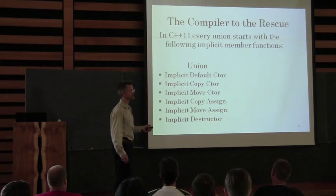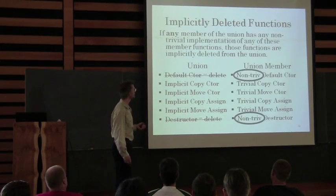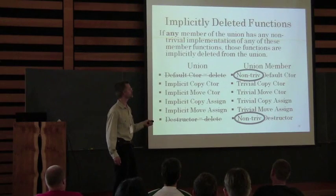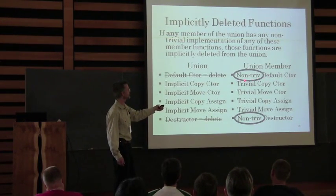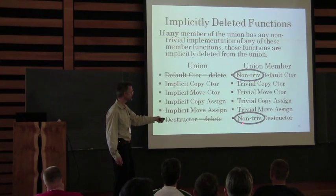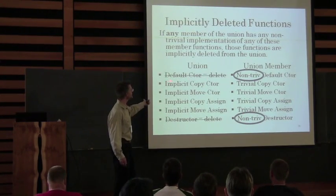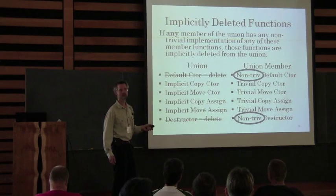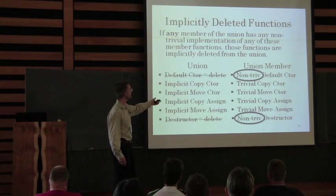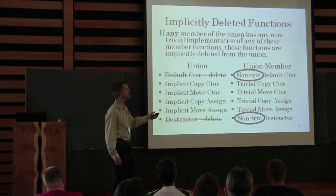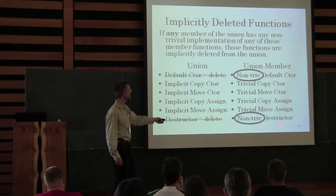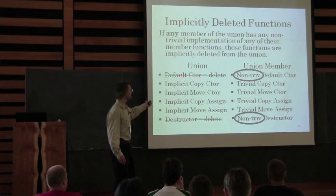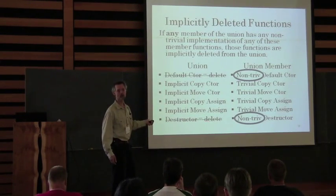Every union starts with the following implicit member functions — the six standard ones, including the move functions which are new with C++11. If you put into a union a type that has an explicit non-trivial version of one of these functions, then the union has that implicit method deleted.